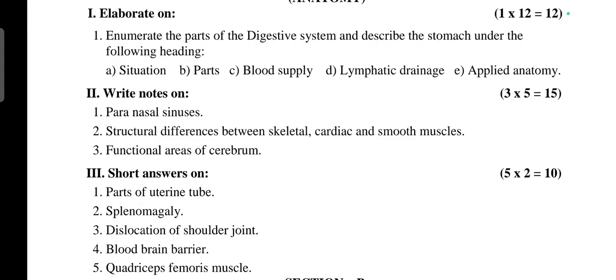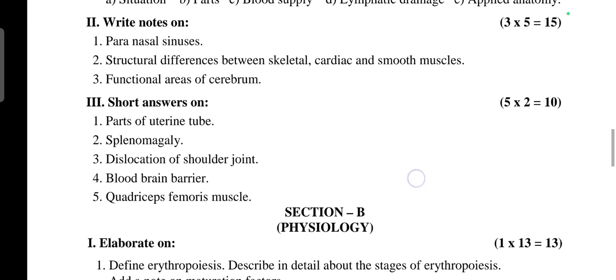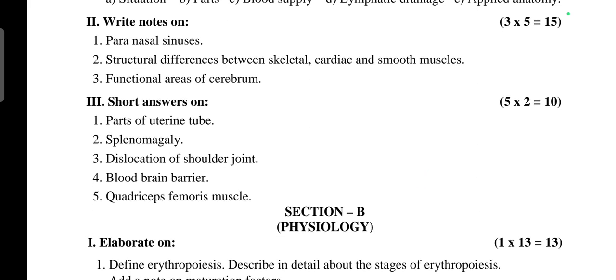Next, structural differences between skeletal, cardiac, and smooth muscles - 5 marks. Next, functional areas of cerebellum - 5 marks, total 15 marks. Short answer questions are: parts of uterine tube.